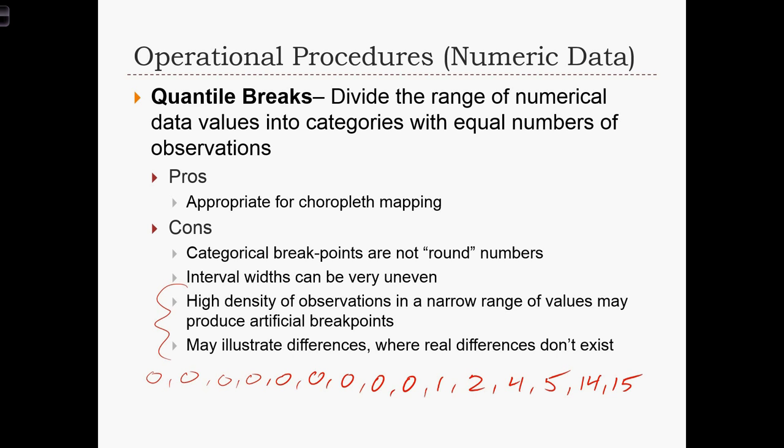Okay, so we have 15 values here. And here, we're going to divide the data up such that each category has an equal number of observations, and let's do it so that we divide our data set into three equal groups. So because we have 15 observations, each group is going to have five observations in it.